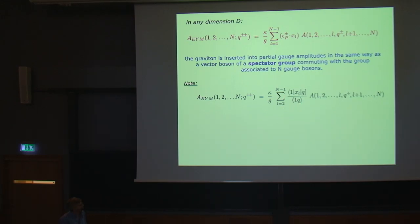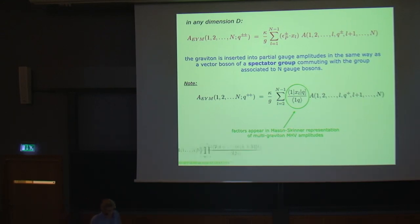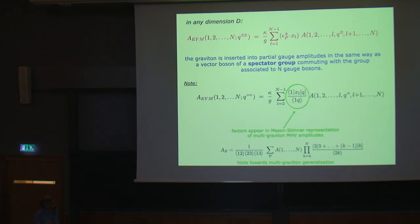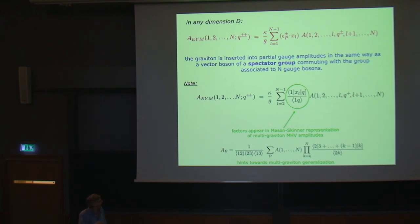Going back to four dimensions, this formula looks similar to a known result describing MHV n-point graviton amplitudes by Mason and Skinner. In four dimensions, here we have only one graviton while the rest are gluons, hence a product of these brackets. You might even imagine how the generalization to n gravitons would work, expecting additional factors in terms of split factors from the soft limit. There is a nice coincidence between these two formulas.